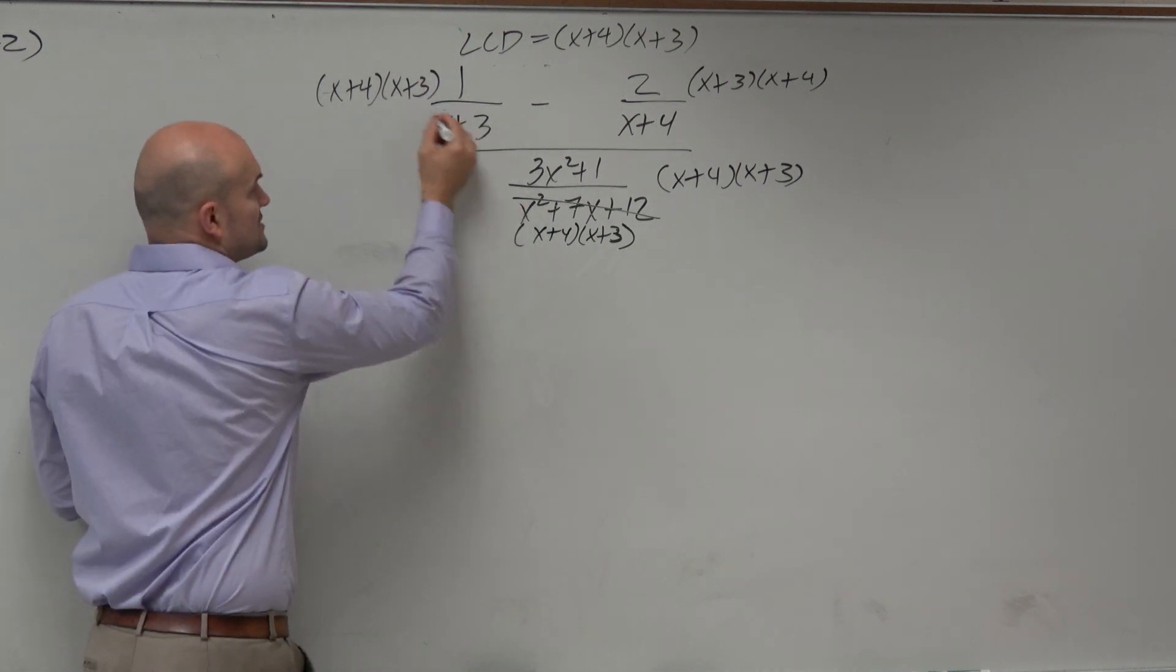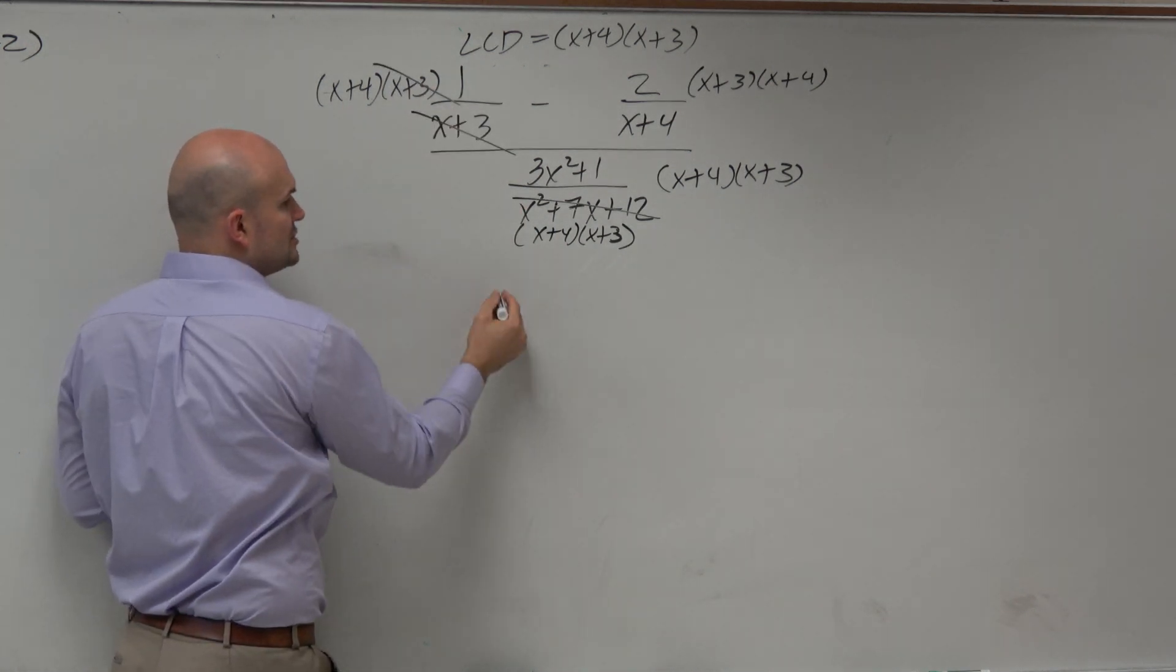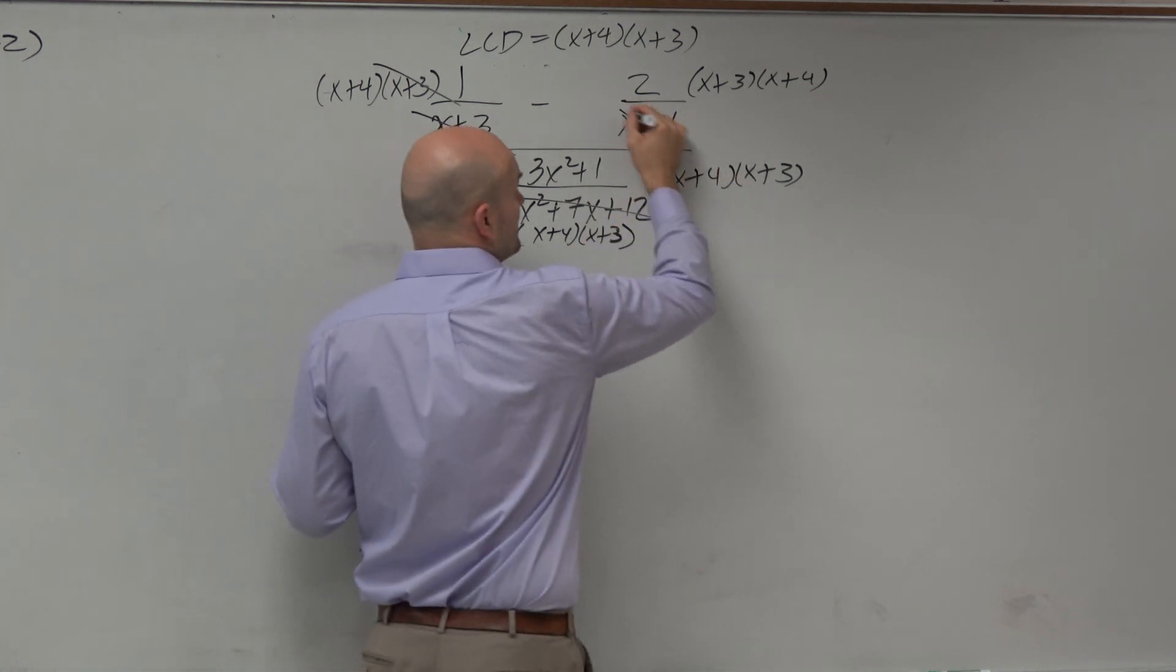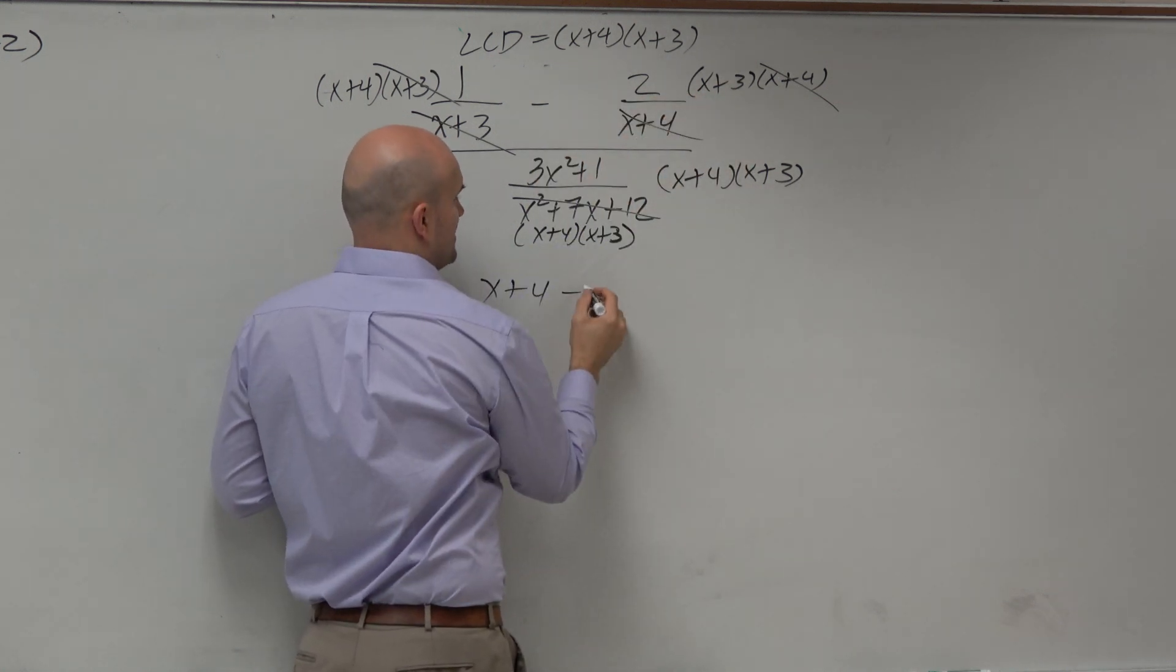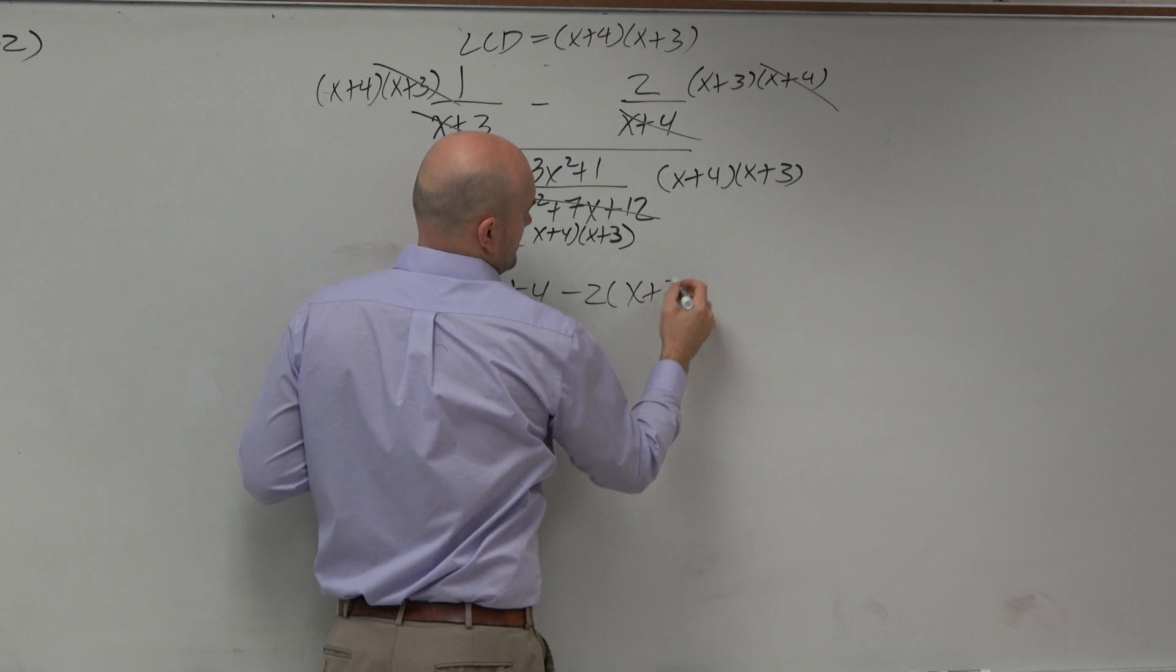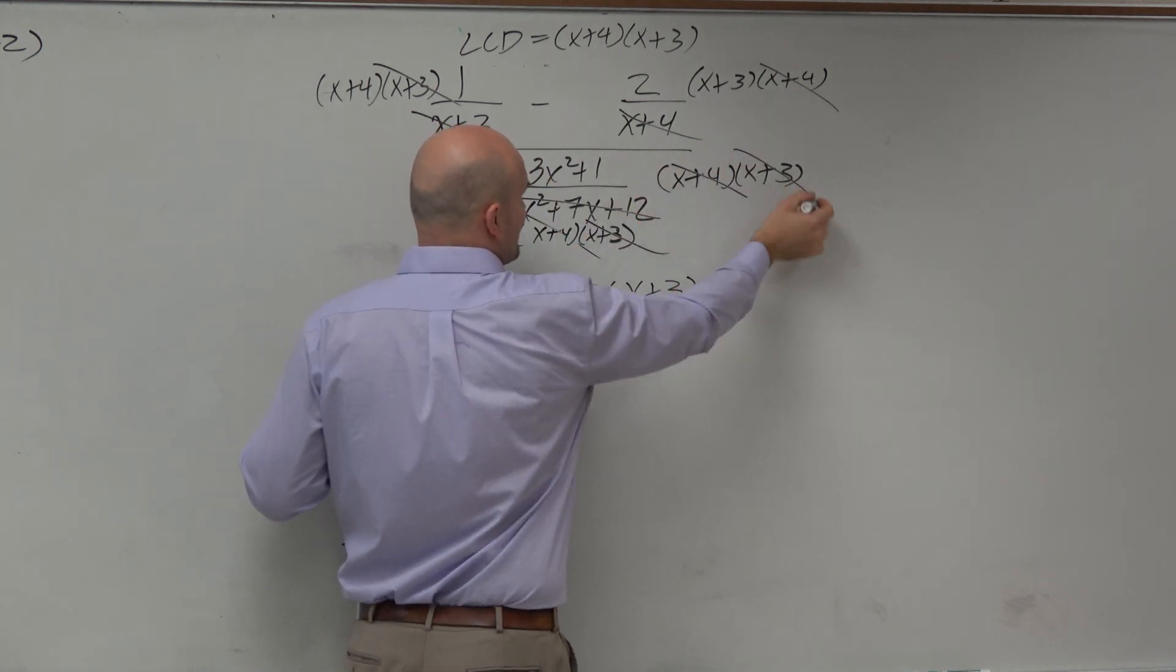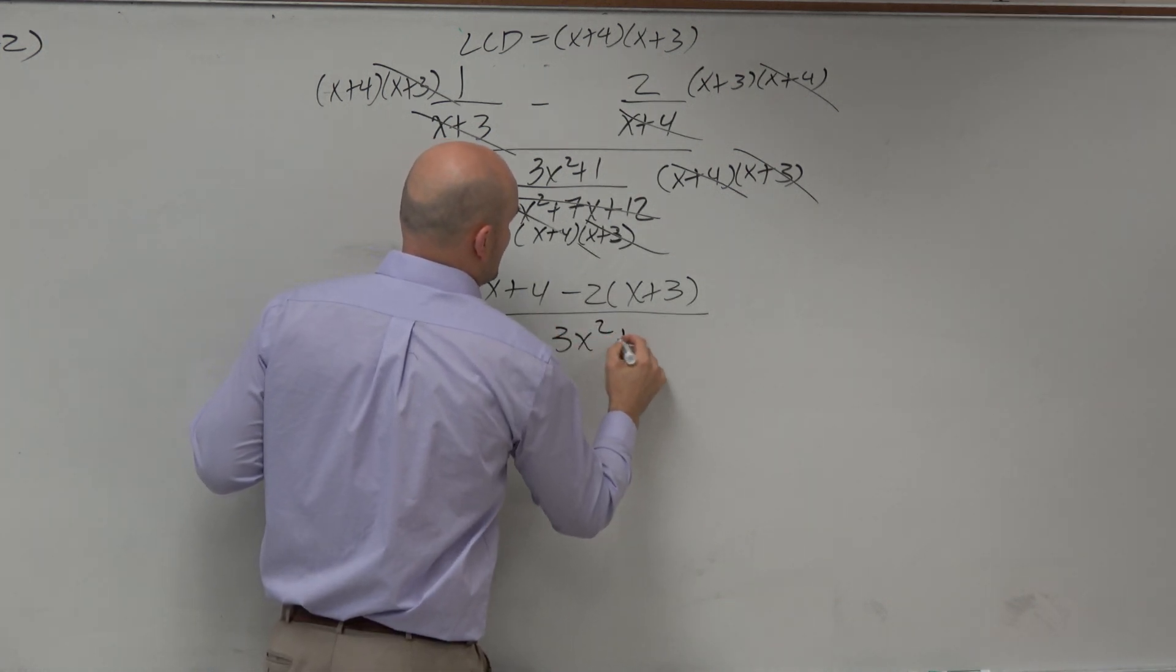Here, the x plus 3's are going to divide out, leave me with 1 times x plus 4, which is just x plus 4. Here, the x plus 4's divide out, leave me with a negative 2 times x plus 3. Denominator, x plus 4's divide out, x plus 3's divide out, leave me with the numerator, which is just 3x squared plus 1.